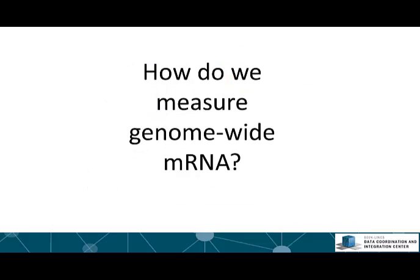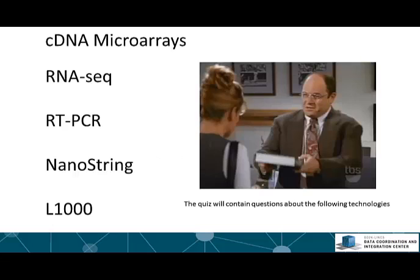In each human cell there are at least 30,000 different species of mRNA, each with many copies. What are the assays that can measure genome-wide mRNA levels? We are not going to get into those assays because this is out of the scope of this course. We are going to talk about the L1000 assay, which is a unique assay for links. However, in the midterm and final you will be asked about those technologies, so I recommend doing research on each of them if you are interested in taking those exams.